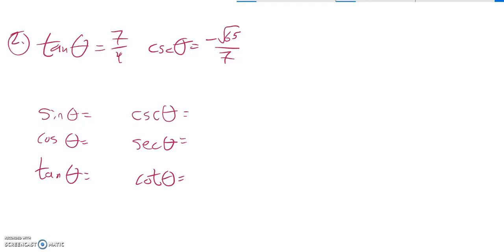And we were supposed to find all six trig functions, the exact values of these, for theta. And we know a couple things about theta. We already know the tangent is 7 fourths. So we also know the cosecant is negative root 65 over 7.